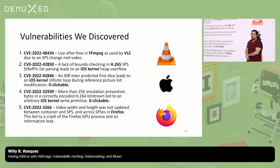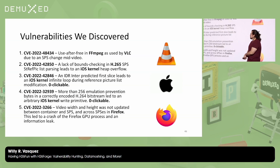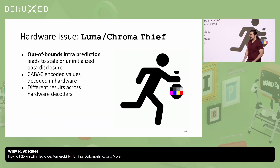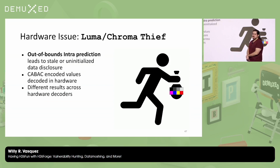We were able to find issues and get CVEs for FFmpeg as used by VLC, CVEs for issues in the iOS kernel — a couple of them zero-clickable, one in H265 — and also an information leak in Firefox. I'll be telling you about one vulnerability we found today called Luma Chroma Thief. This is an issue we found inside hardware: an out-of-bounds intra-prediction that leads to stale or uninitialized data disclosure. This is in the CABAC-encoded values, and we found that across different decoders, we get different results.